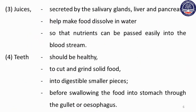Juices secreted by salivary glands, liver, and pancreas can be passed into the bloodstream. The liver and pancreas should be healthy. Food is broken into digestible small pieces.